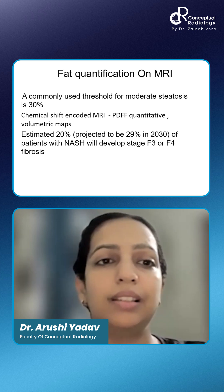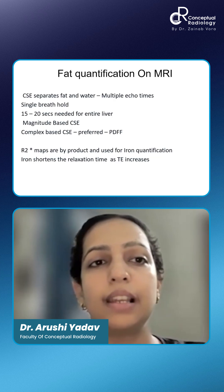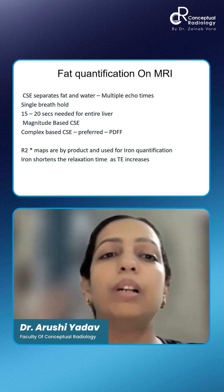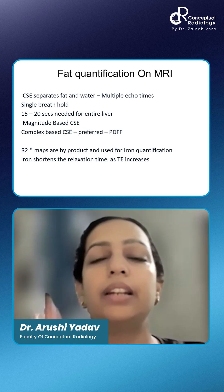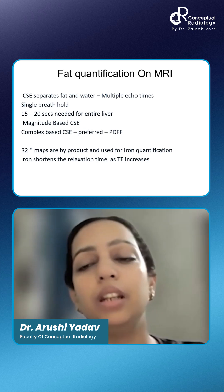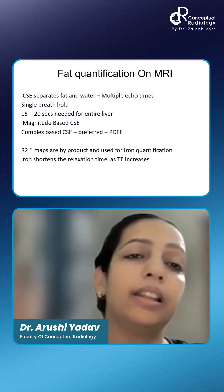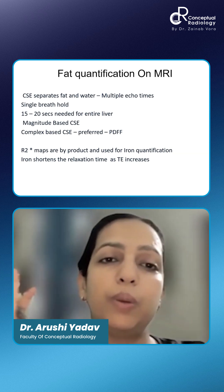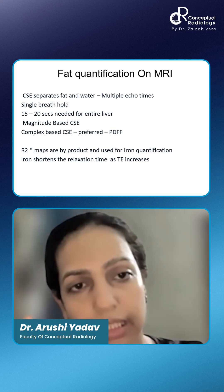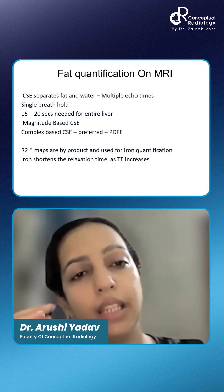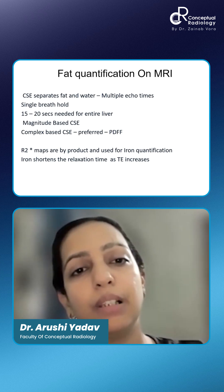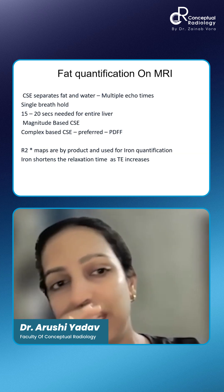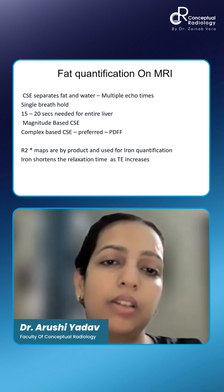These chemical shift sequences are able to separate fat and water at multiple echo times, and that is how they quantify how much fat is present. They can be done in a single breath hold, and they need about 15 to 20 seconds for the entire level. They generate magnitude-based chemical selective sequences or complex ones.